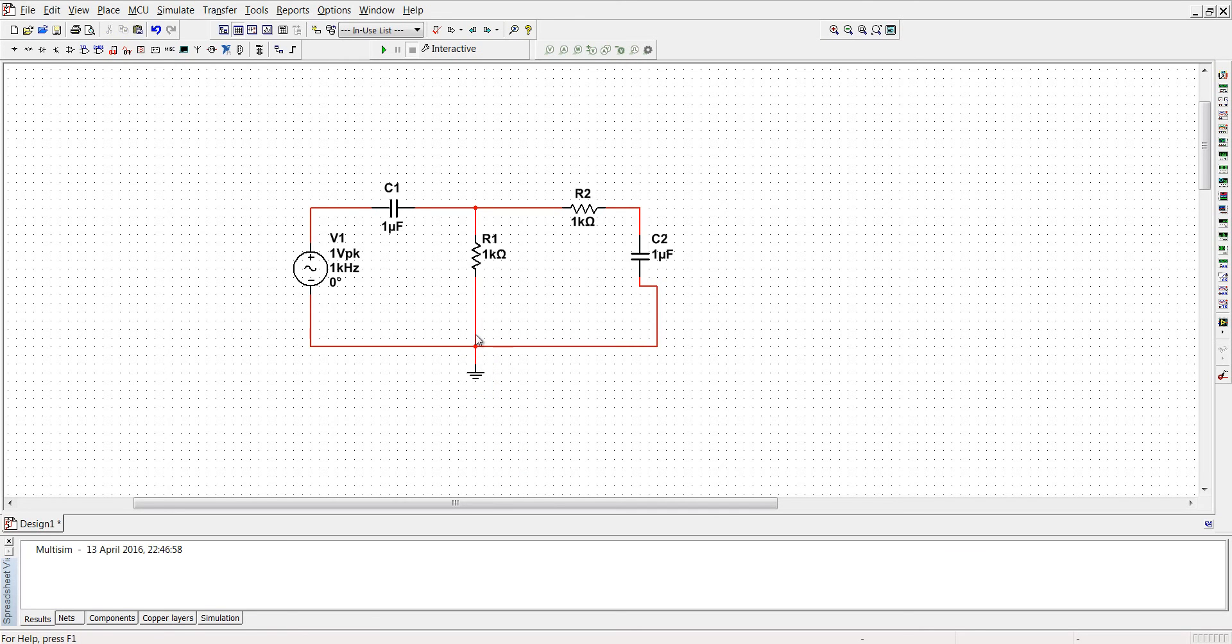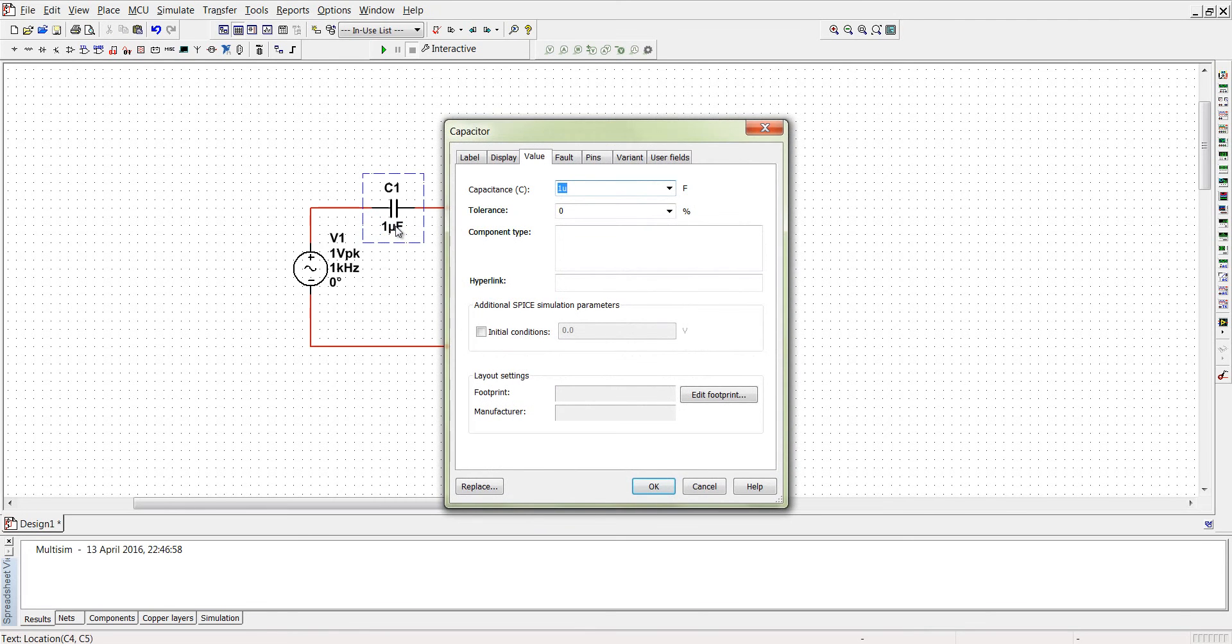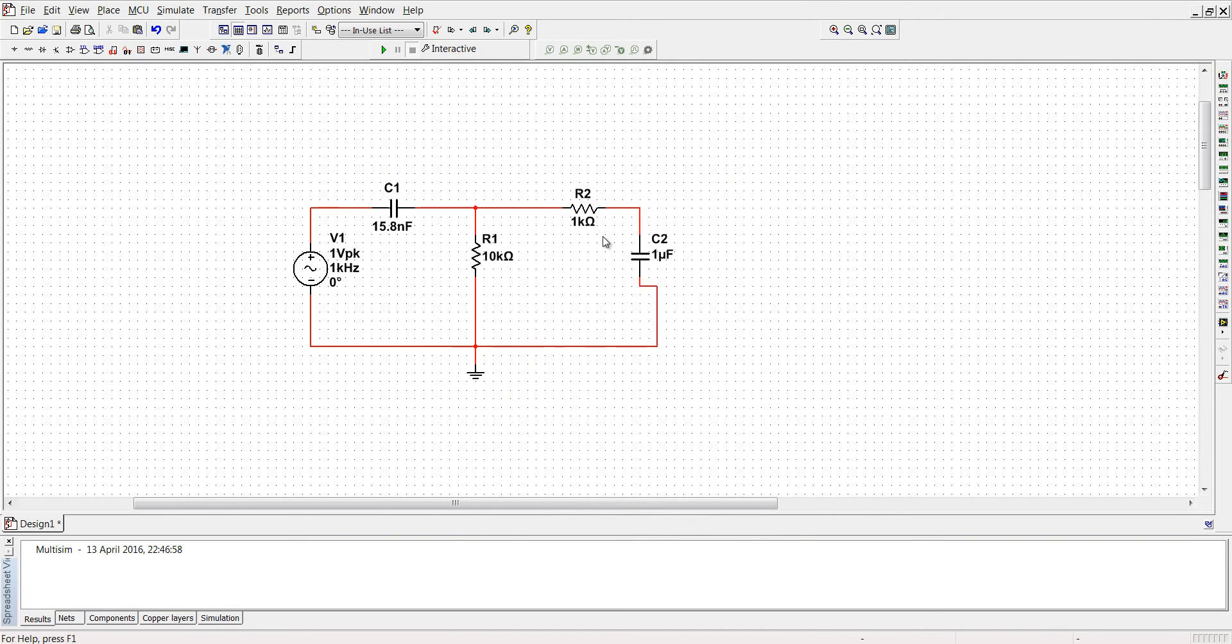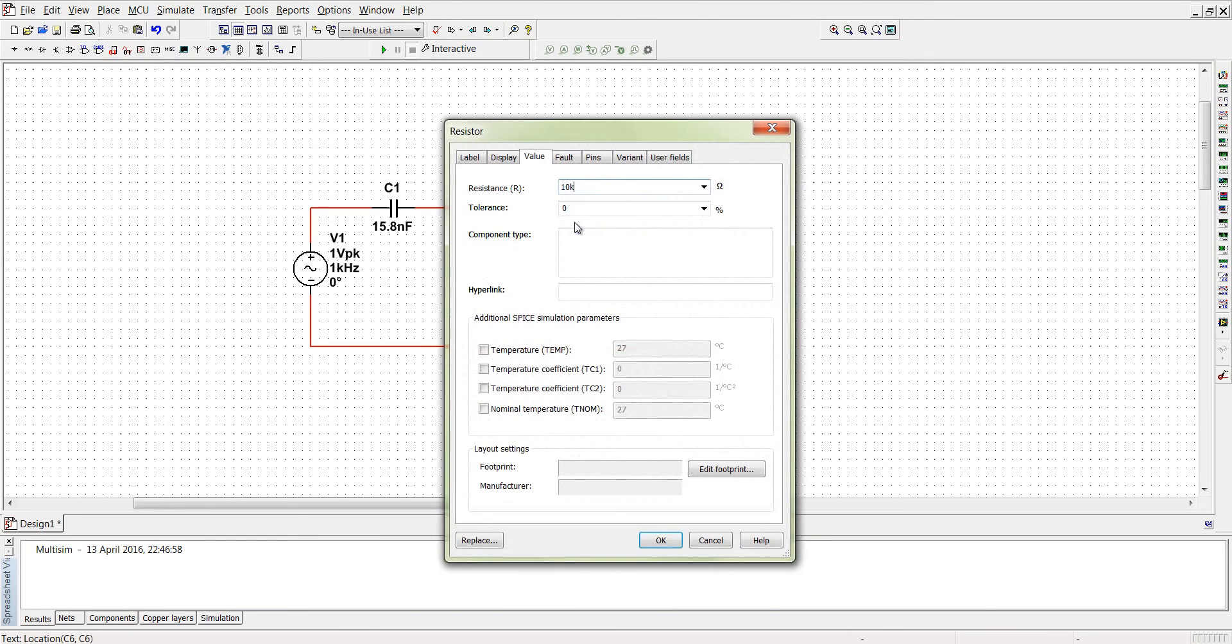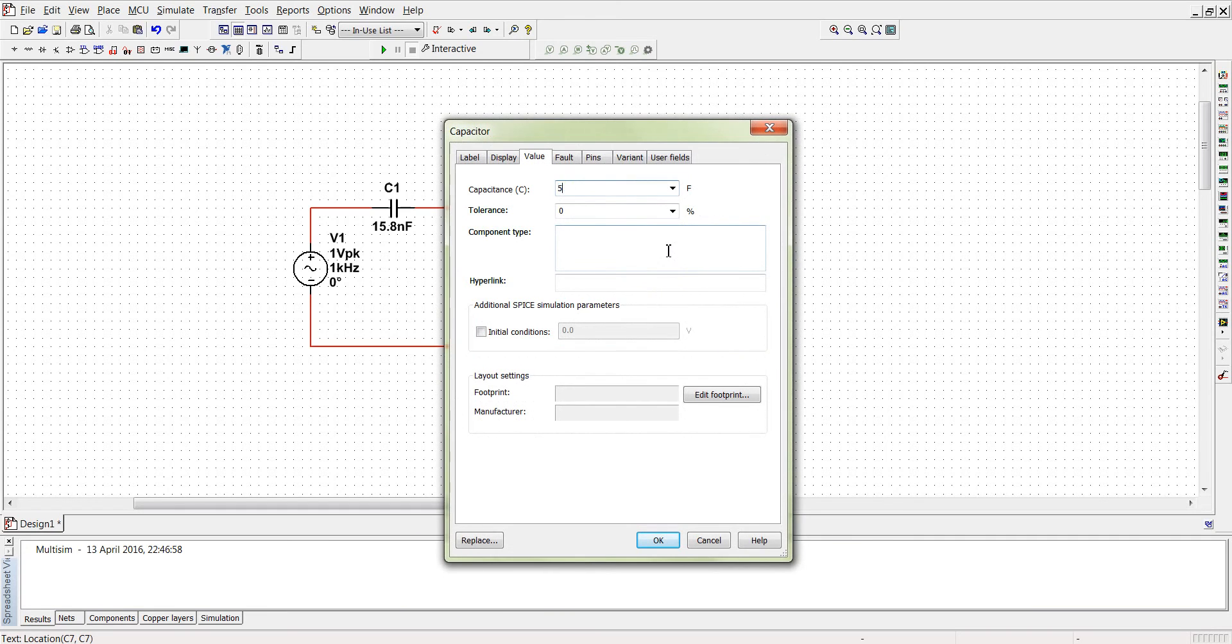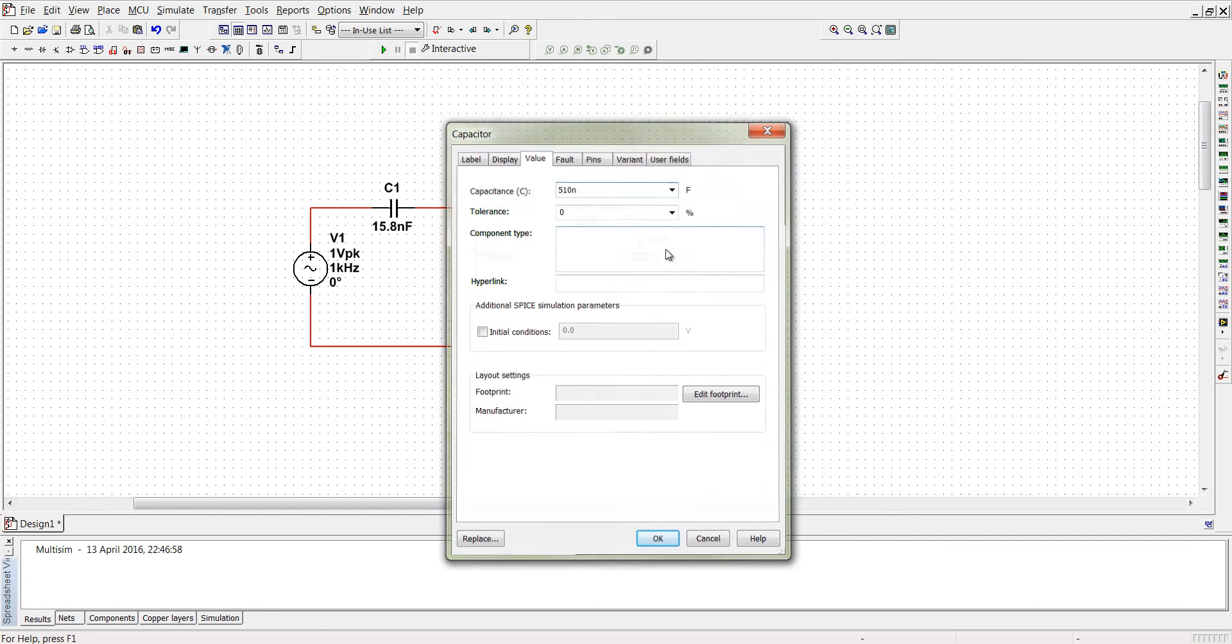Now let's change the component values: C1 is 15.8 nanofarad, R1 is 10 kilohm, R2 is also 10 kilohm, and C2 is 510 nanofarad.